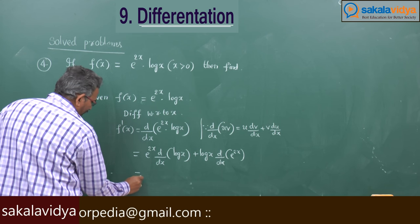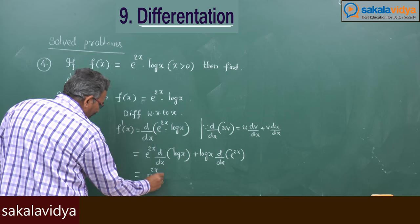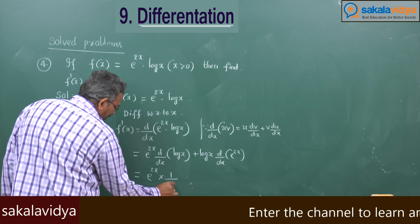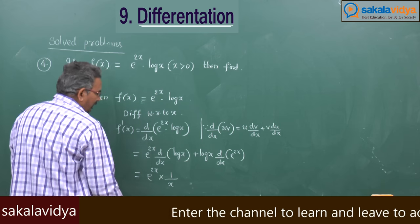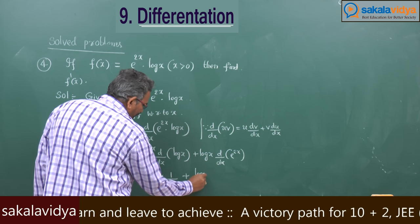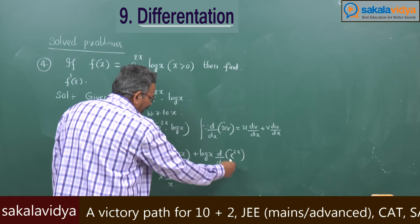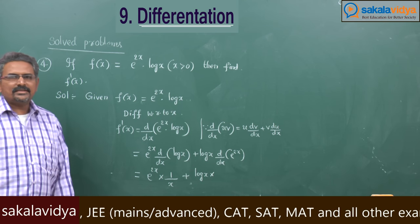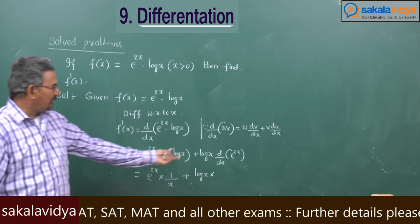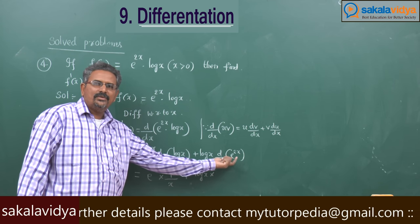So the derivative becomes: e power 2x into log x differentiation is 1 by x, plus log x into the differential coefficient of e power 2x. Generally, people make a mistake while evaluating the e power 2x value.